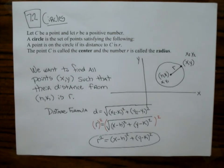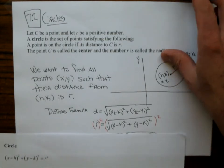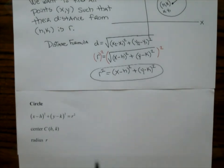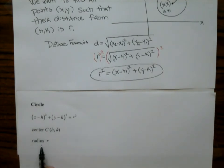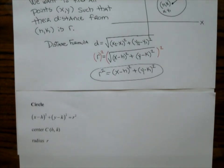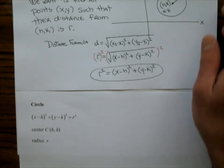So a circle with center C = (h, k) and radius r has the standard equation: (x − h)² + (y − k)² = r². The r² is on the right-hand side — that's just a matter of style. Now the rest of what we do involves problems you'll see in your homework.